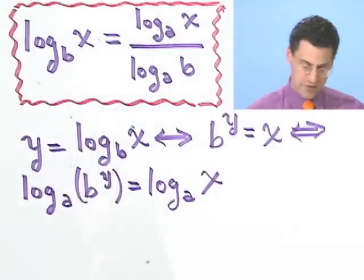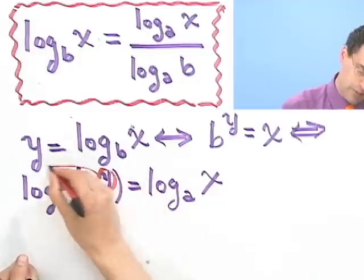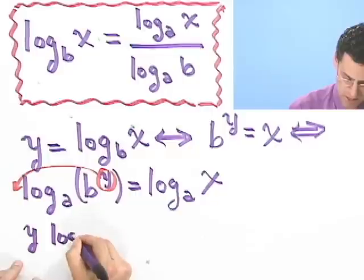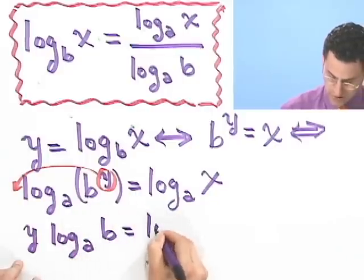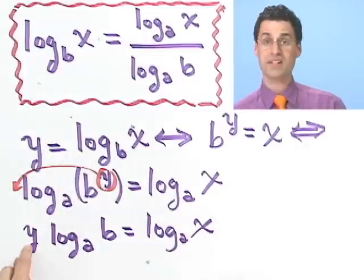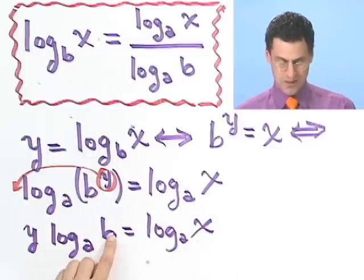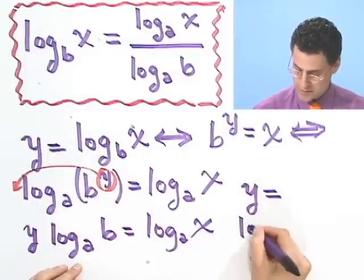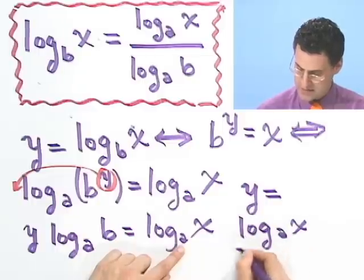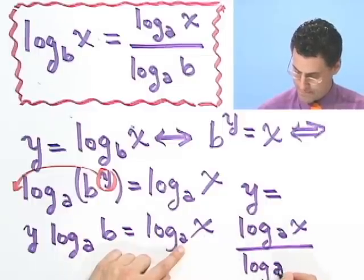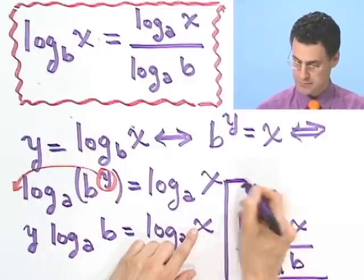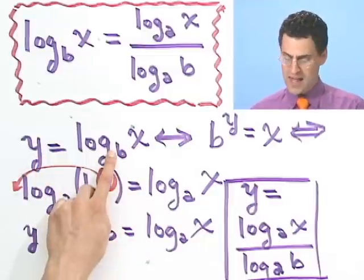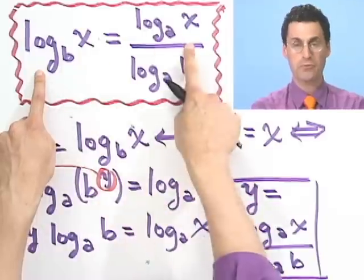See, if two numbers are equal, their logarithms will be equal as well. So I just took the log base a of both sides. But now I use that great property of logarithms that if I have a log of something to a power, that can be pulled out in front. So if I do that, I see y log base a of b equals log base a of x. And if I solve this for y, I just divide both sides by log base a of b. It cancels here, and I see that y equals log base a of x divided by log base a of b.